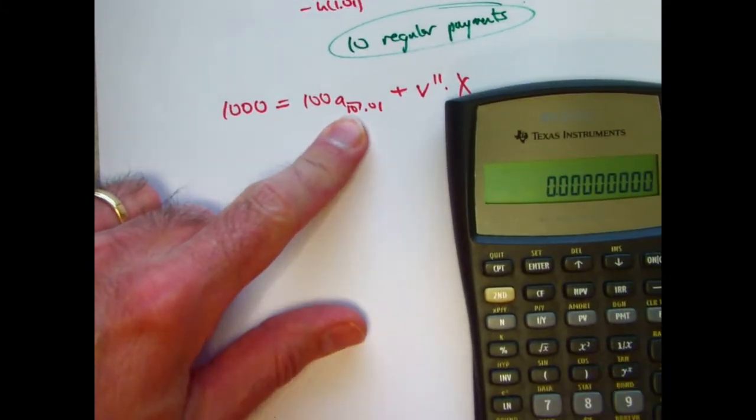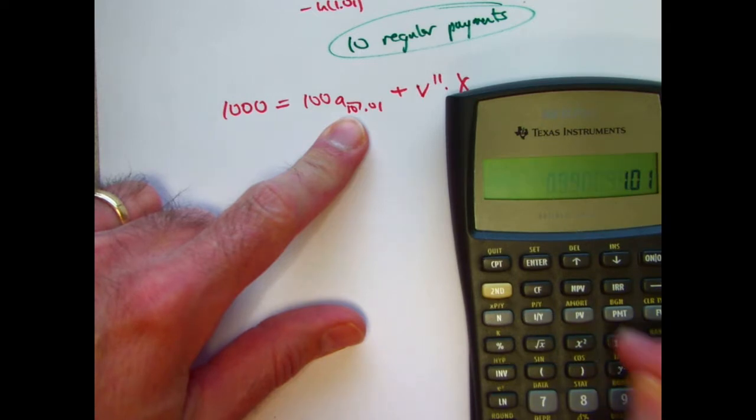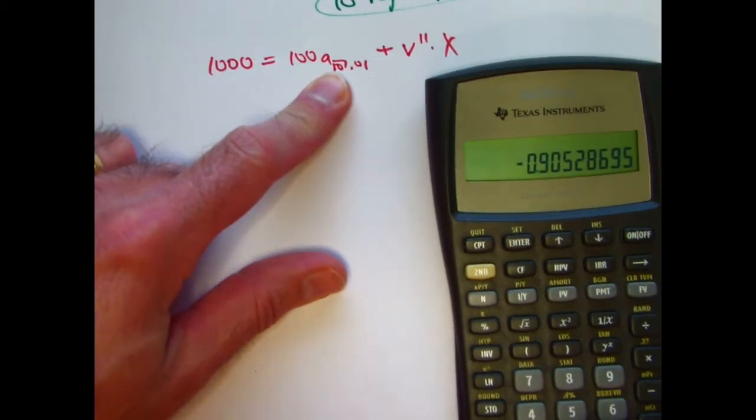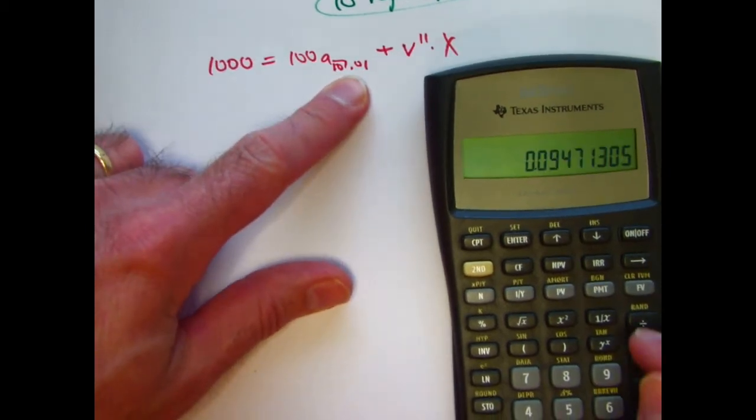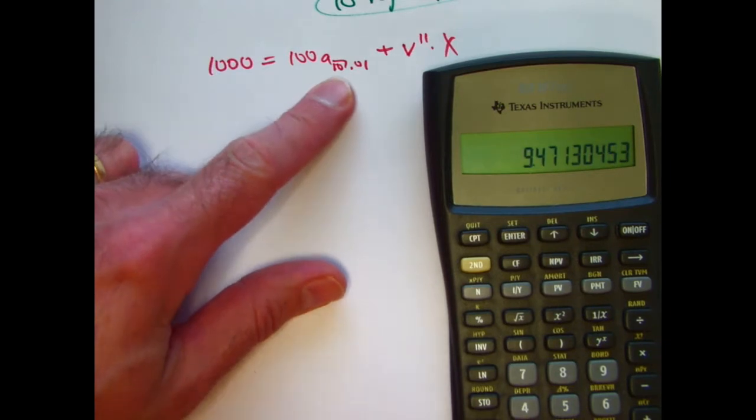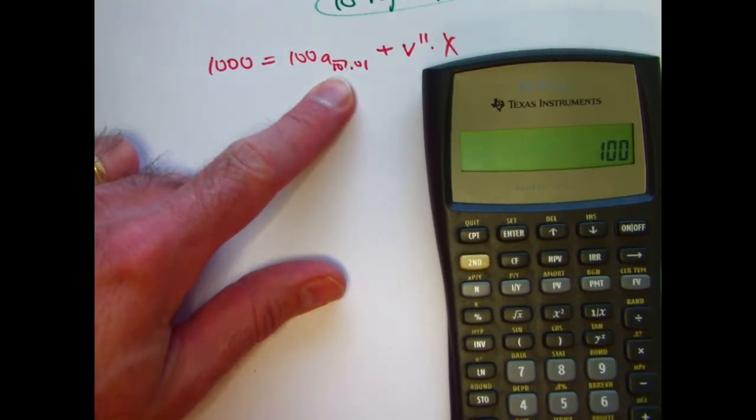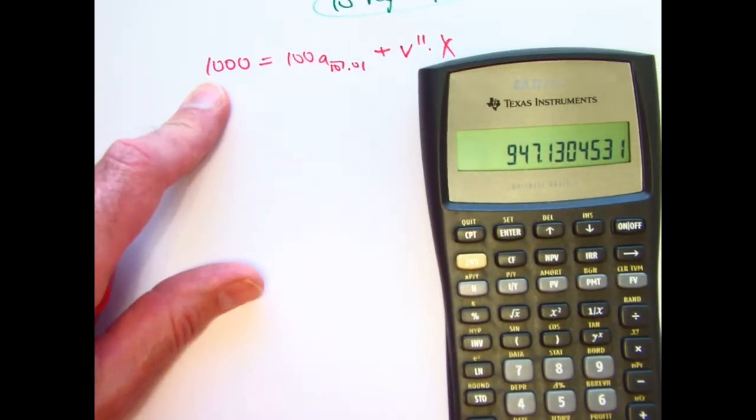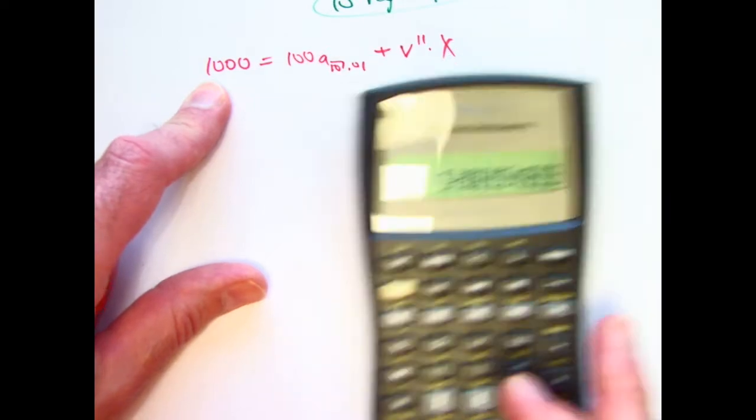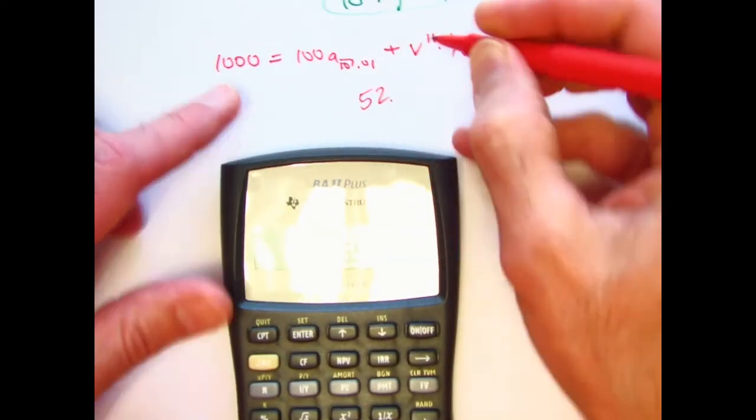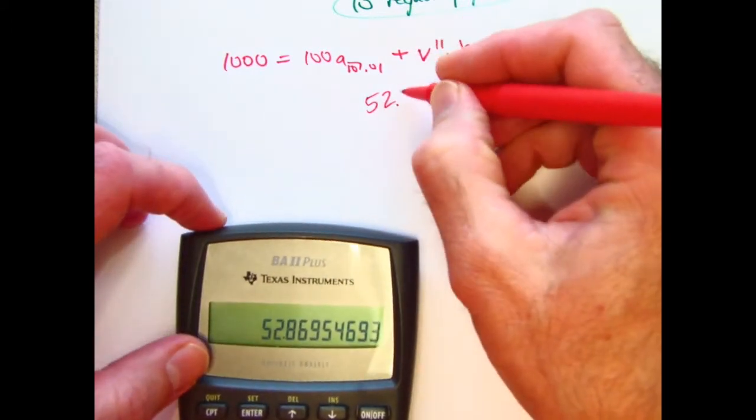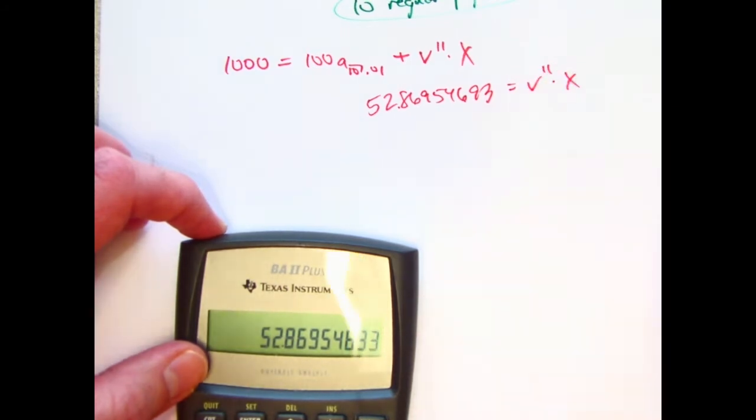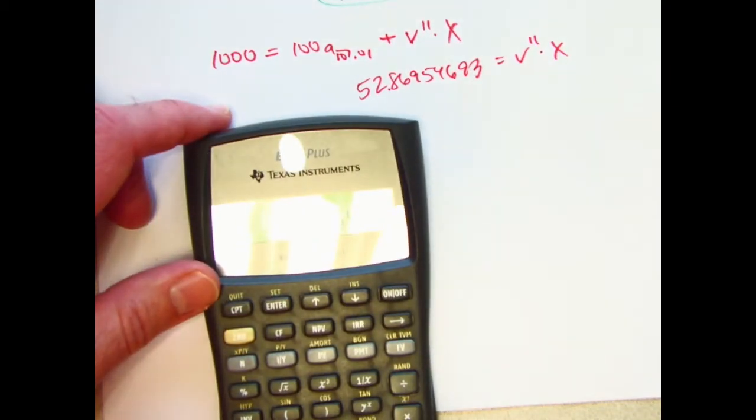Coming to the a here, 1.01, take its reciprocal, raise it to the 10th power, subtract that from 1, divide by 0.01. This a here is about 9.47 multiplied by 100. And then subtract that from 1,000. Looks like we get 52.86954693 equals v to the 11th times x. Let's store this in register one.